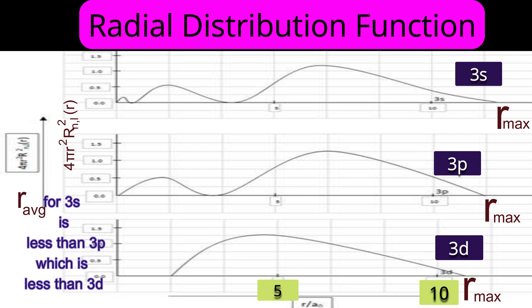Now that we understand how electrons are distributed radially and what the probability of finding electrons looks like along the radial coordinate, we will move on to the angular shapes of orbitals, using the other two coordinates theta and phi, in the next part.